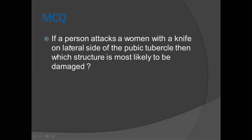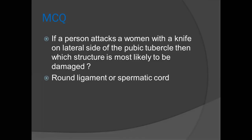If a person attacked a woman with a knife on the lateral side of the pubic tubercle, which structure is most likely to be damaged? The options included round ligament and spermatic cord. But since the question specifies a woman, there is no spermatic cord — the answer is round ligament. The word 'woman' is the key word for this MCQ.